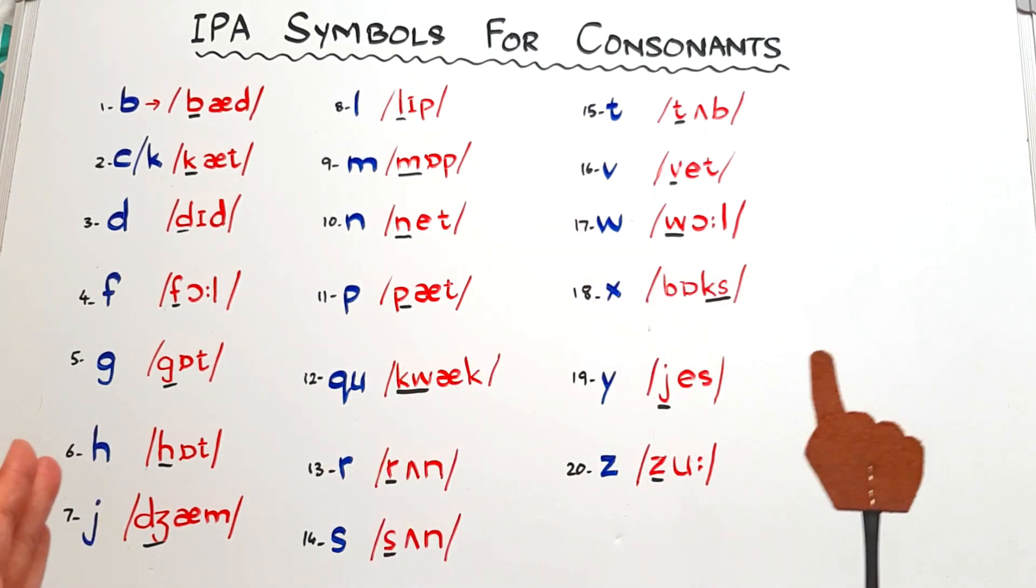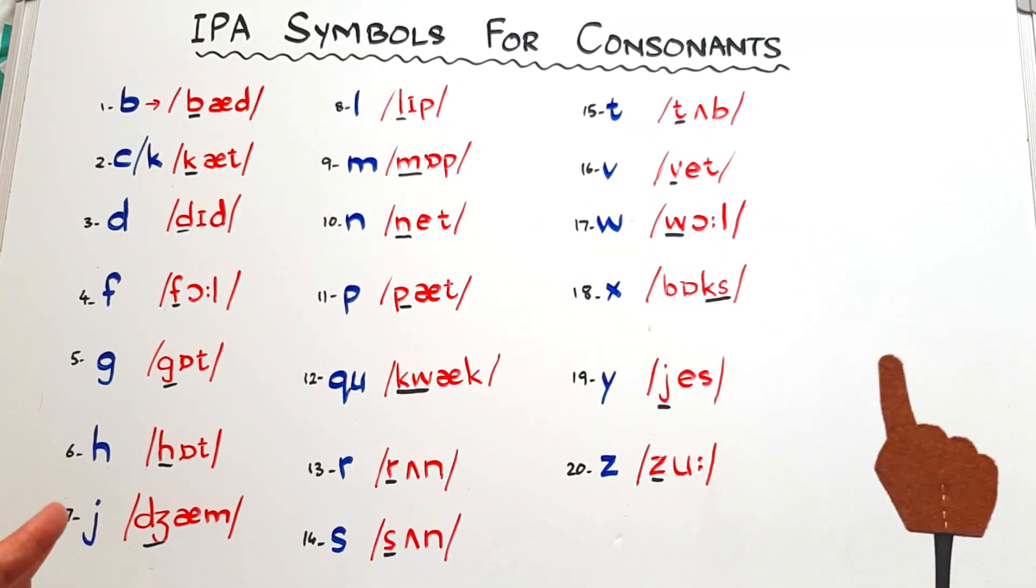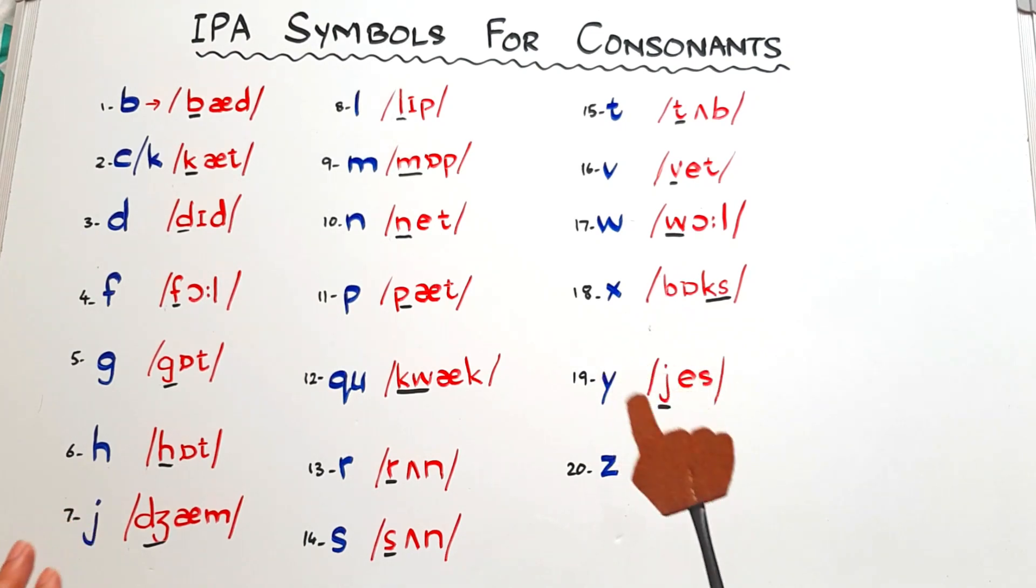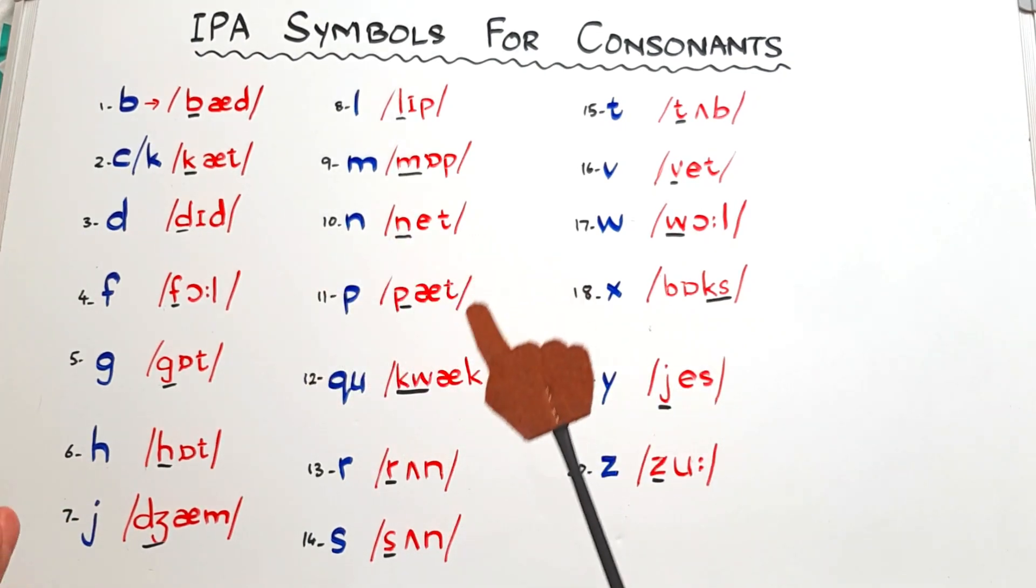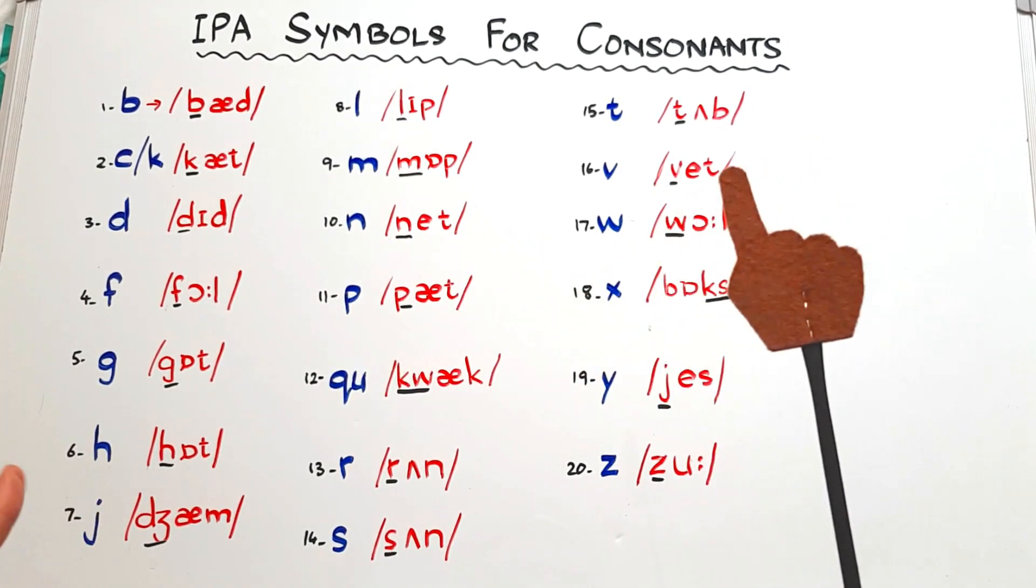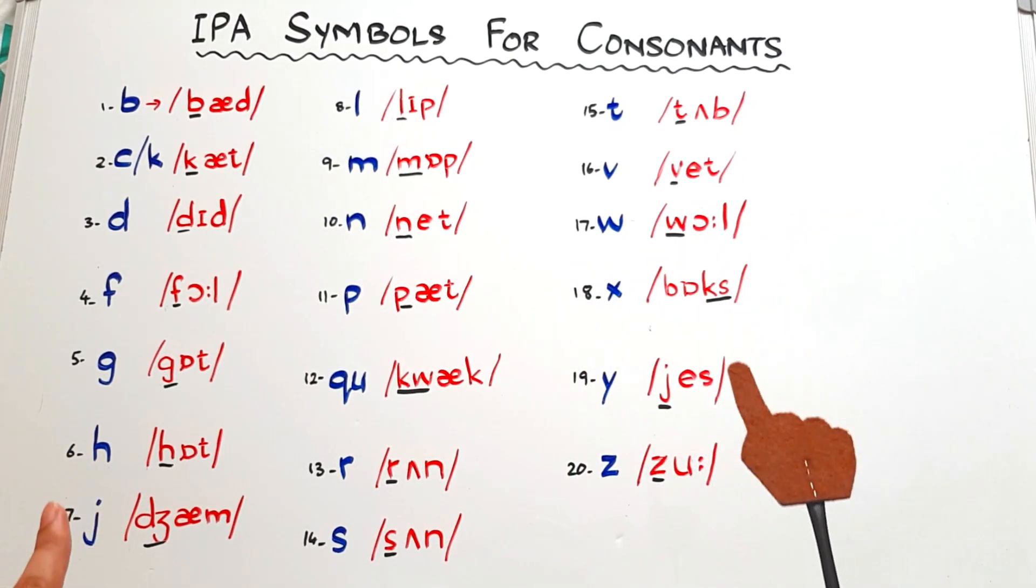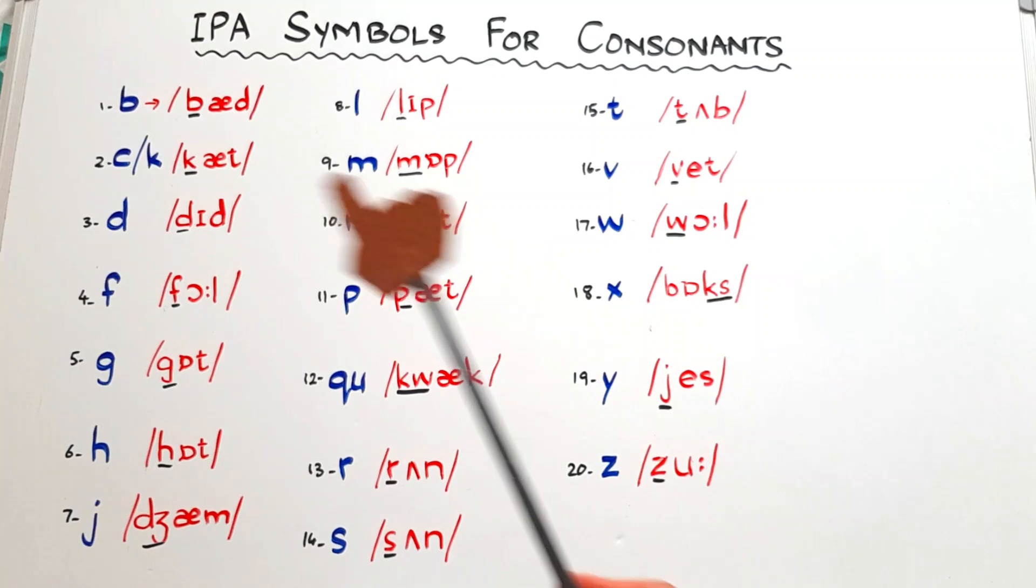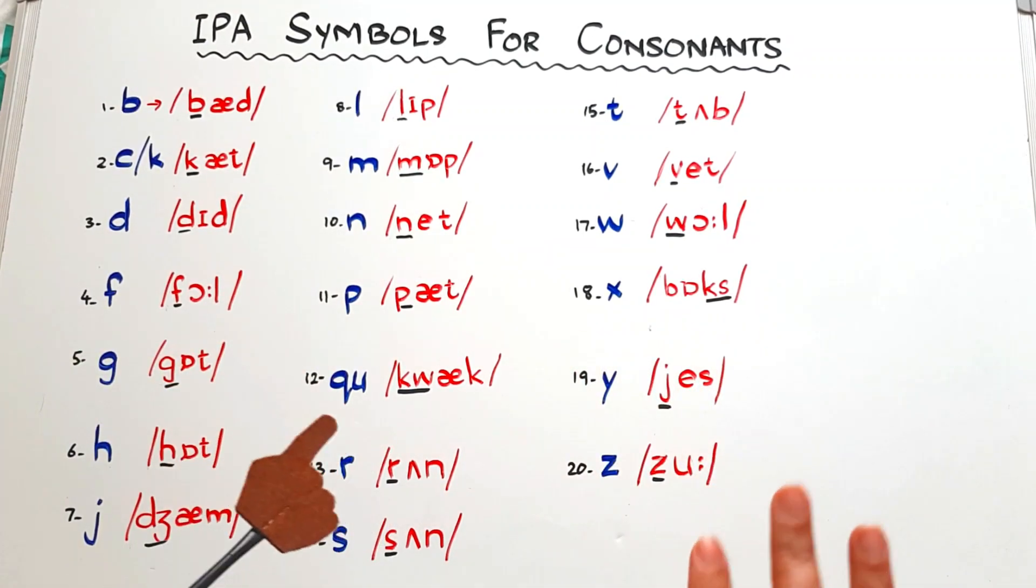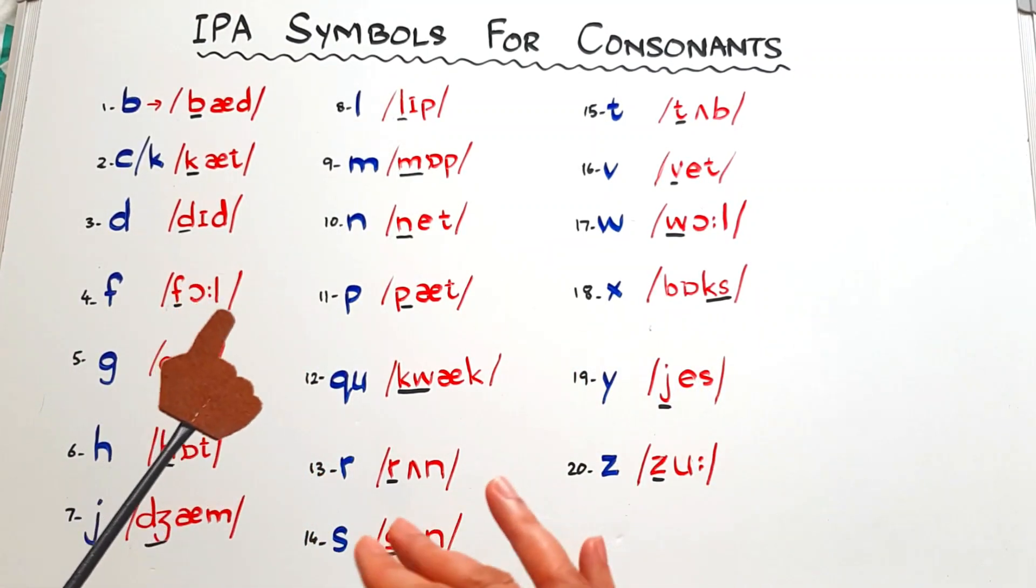Hi all, welcome to Homeschooling with Hira. Hope everyone is well. In today's video I'm going to share with you the IPA symbols for consonants. If you want to learn about the IPA symbols for vowels, the link to the video is in the description box. Here I'm going to tell you only about the symbols of consonants.